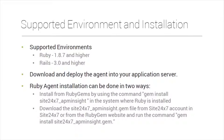For Ruby on Rails, the supported environment is version 1.8.7 and higher, and Rails 3.0 and higher. Download and deploy the agent in your application server. Installation can be done in two ways: install from RubyGems using the command 'gem install site247-APMinsight', or download the Site247-APMinsight gem file from your Site247 account or the RubyGems website.